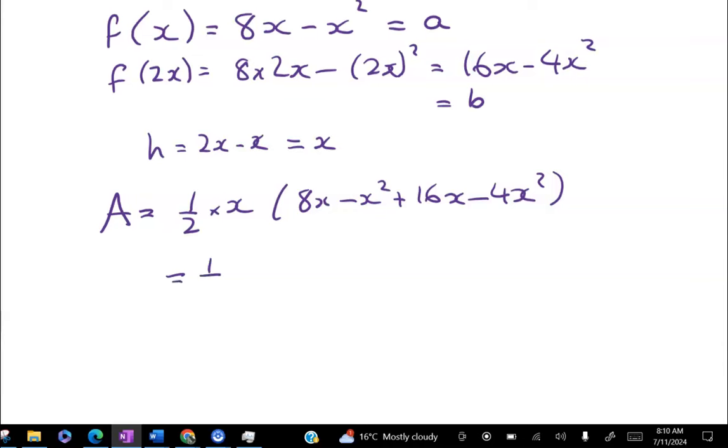That gives me ½x times 24x - 5x². Expanding that out, because we're going to be differentiating, I get 12x² - 2.5x³.